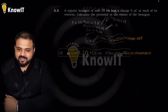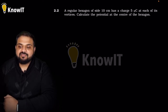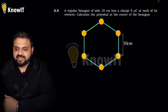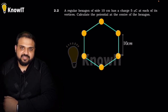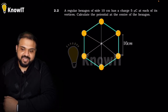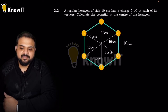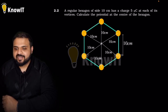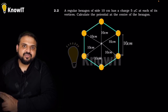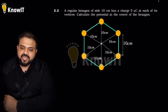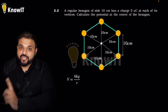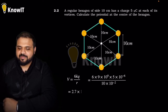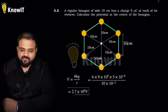Next question: a regular hexagon of side 10 cm has a charge of 5 μC at each of its vertices. Calculate the potential at the center of the hexagon. We know that for a regular hexagon, joining all vertices to the center divides it into equilateral triangles, so the distance from each vertex to the center equals the side length, which is 10 cm. The total potential at center = 6 × kq/r, and putting all values, you get 2.7×10⁶ volt.